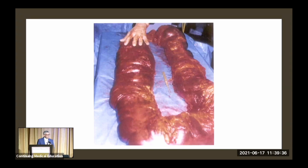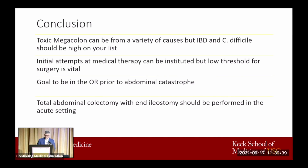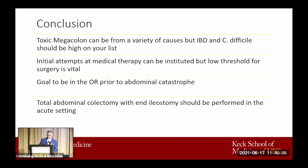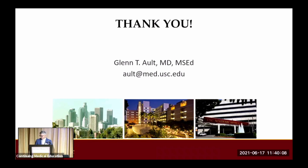In conclusion, toxic megacolon can be from a variety of causes, but IBD and C. diff need to be high on your list. It is always appropriate, unless there is evidence of peritonitis, to attempt initial medical therapy — but you must have a low threshold and involvement of surgery is vital. Your goal is to be in the operating room before that abdominal catastrophe happens, and your operation of choice is a total abdominal colectomy with ileostomy to get you through the acute phase. I always appreciate being here, and I appreciate your guidance and mentorship over these many years. Thank you for the pleasure of the podium.